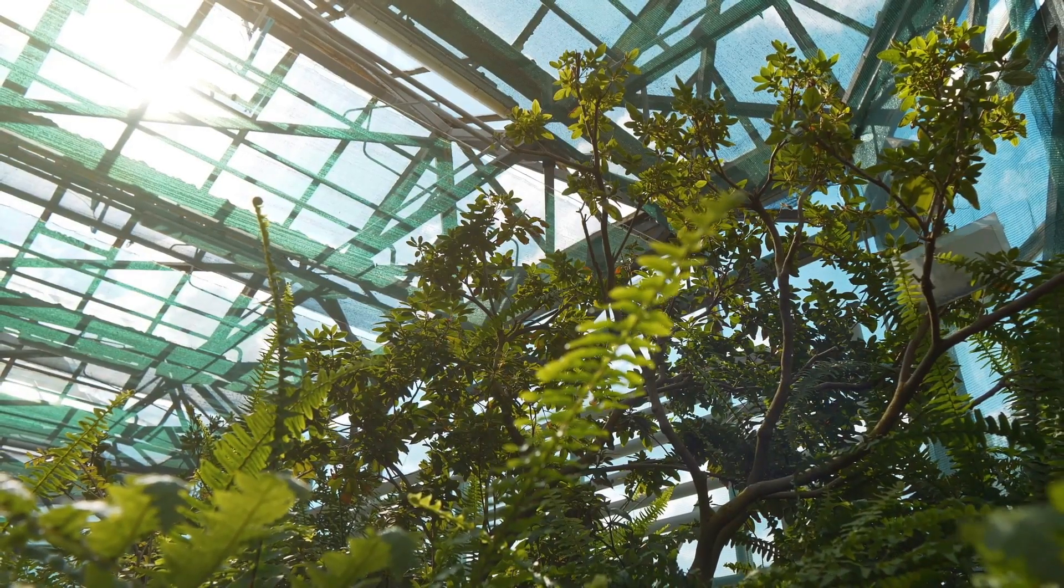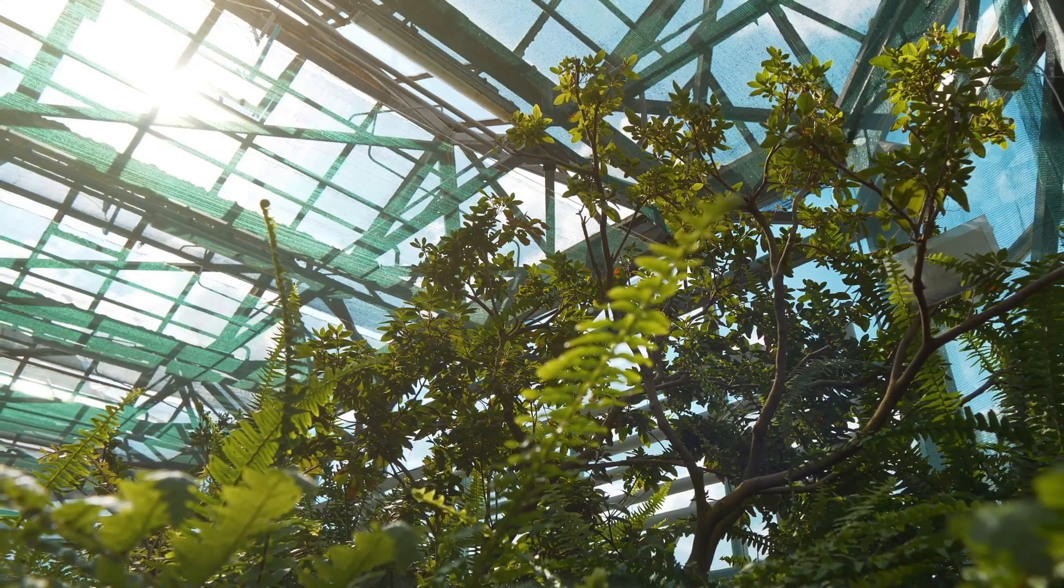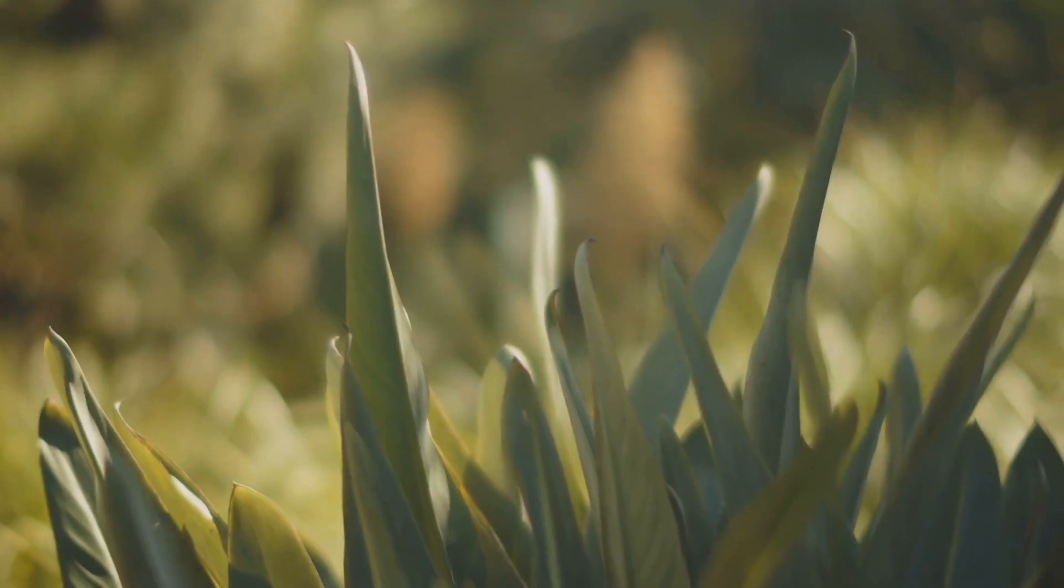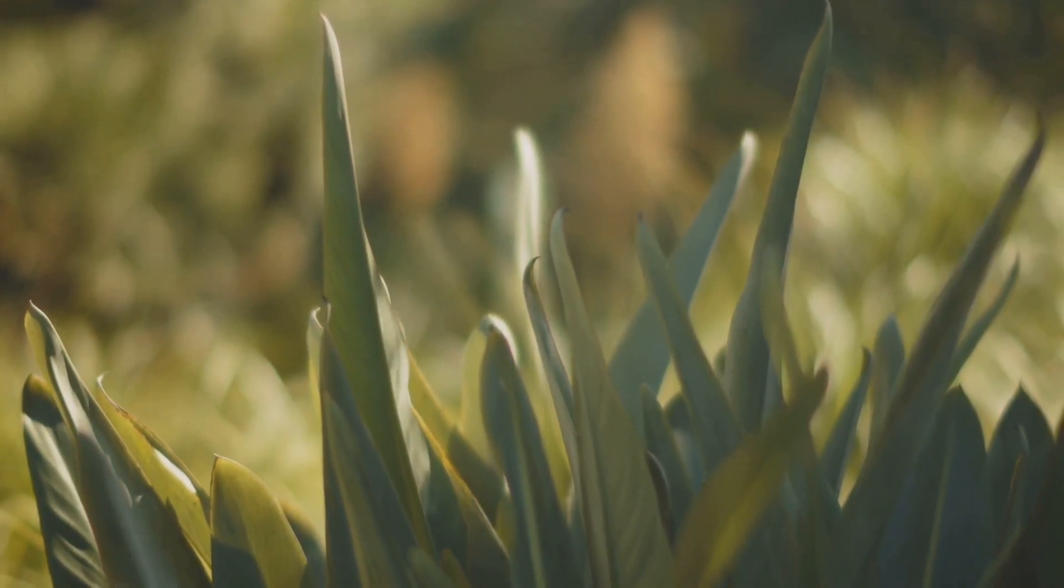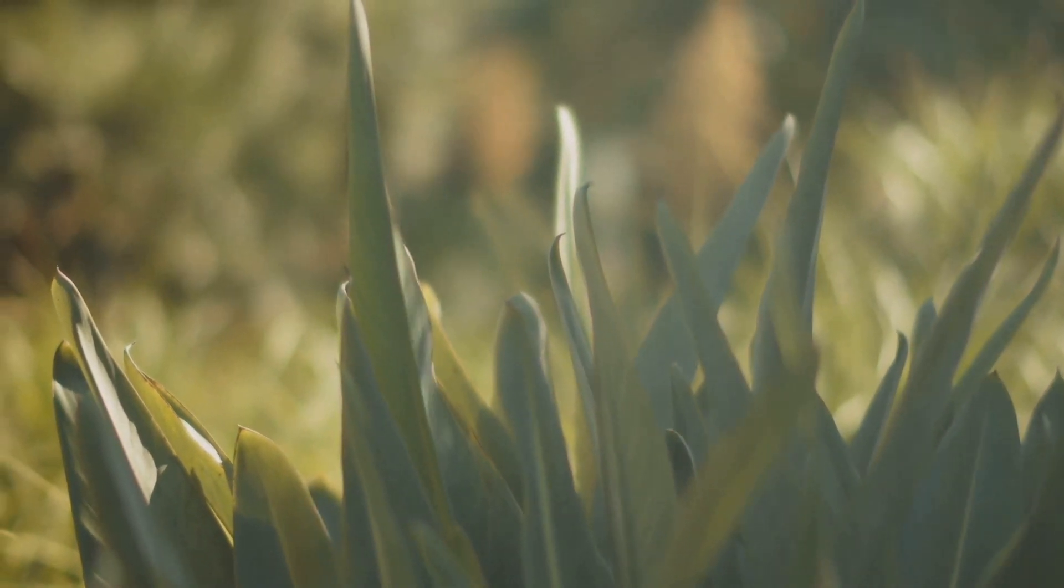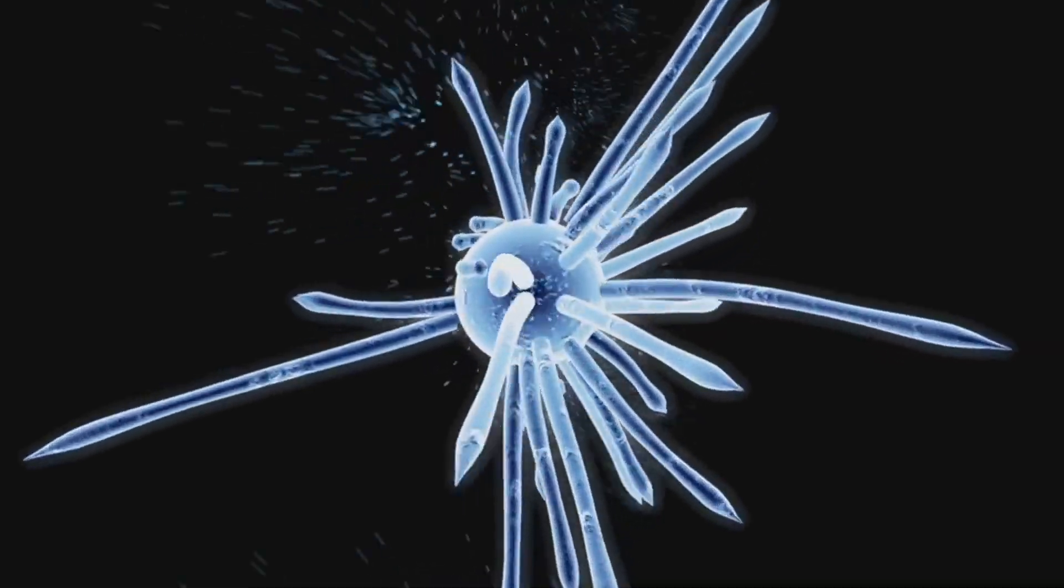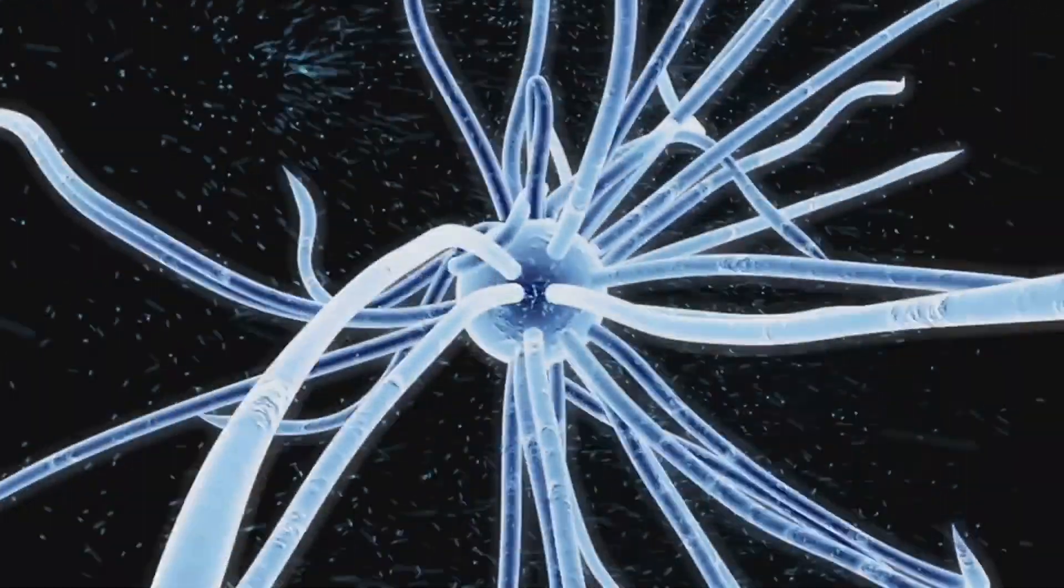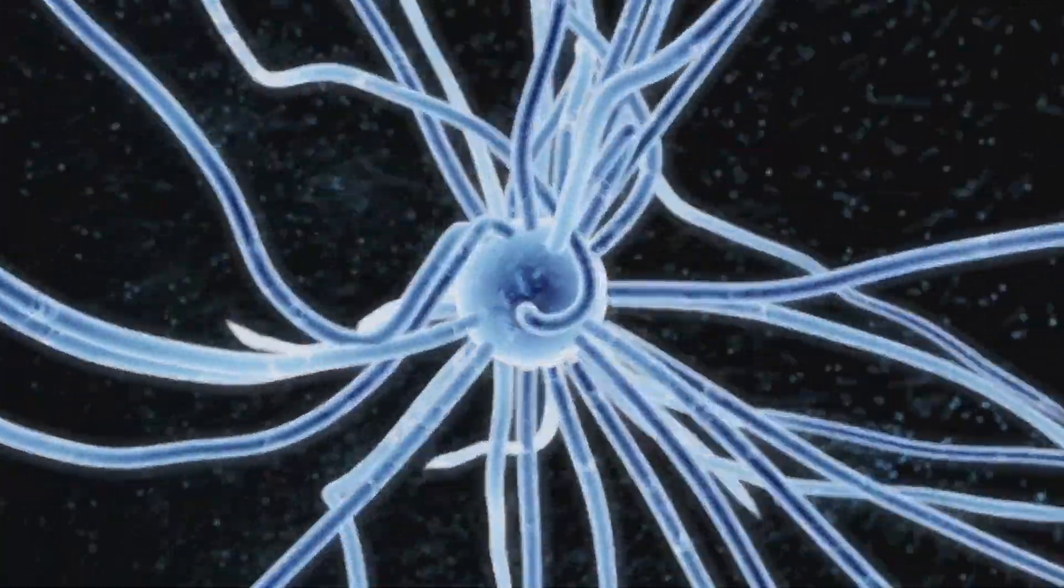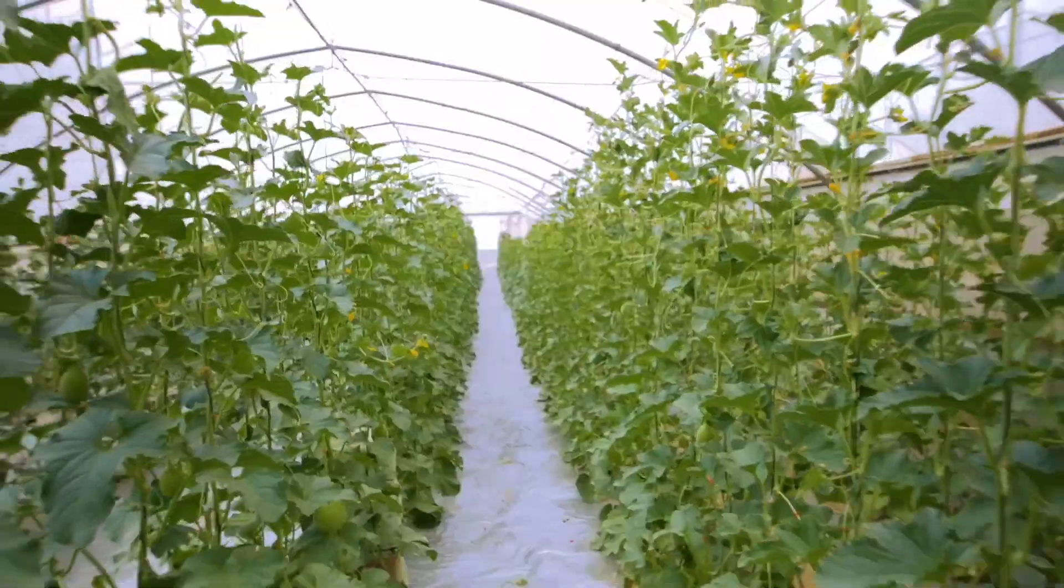But how would life fare in this area? Plants, for instance, could adapt to the constant, low-angle sunlight. They might evolve to become more efficient at photosynthesis under these new conditions. Animal life would also need to adapt. For example, creatures might develop heightened senses to navigate the perpetual twilight, or perhaps evolve bioluminescent traits to communicate or find food. Microorganisms, the most resilient life forms on earth, could also find a way to survive. Some bacteria thrive in extreme conditions, and these extremophiles could be the pioneers of life in the twilight zone.